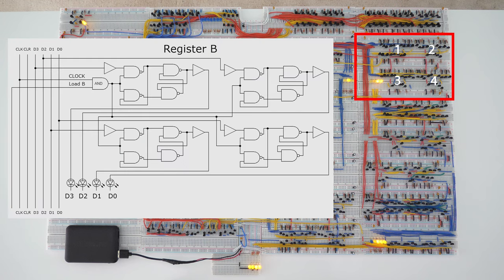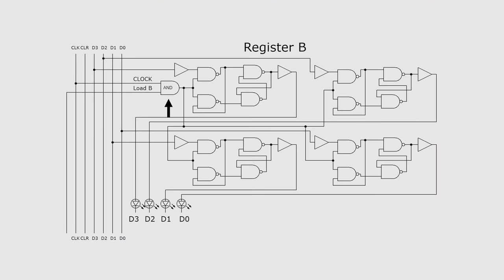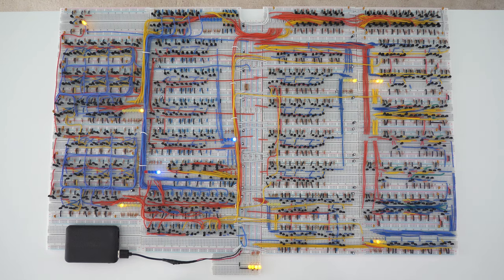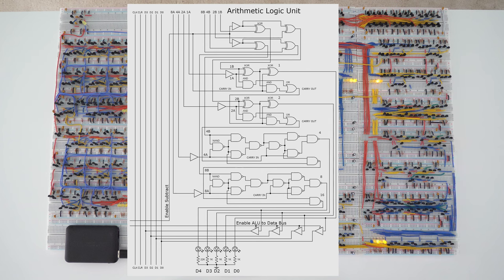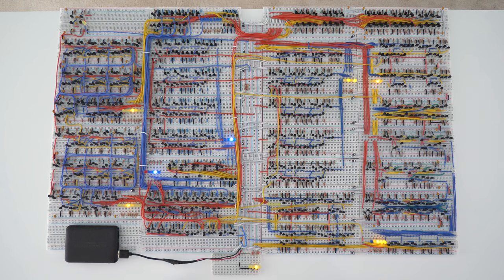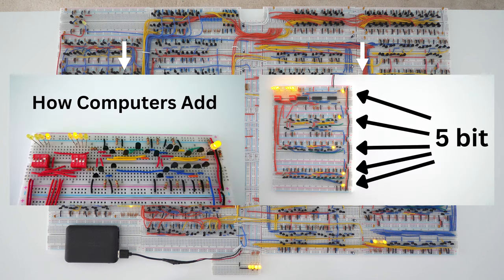The B register is built with four data flip-flops. These are not master-slave data flip-flops or edge-triggered JK flip-flops — they are just regular data flip-flops. Each flip-flop input has a buffer. The clock gate, which is an AND gate, is enabled with a high clock signal and high load B command from the control matrix. When the clock gate is on, it latches the data from the data bus into register B. The latched data is then continuously being sent into the ALU. The ALU is built with four full adders, which allows the circuit to add two 4-bit inputs. It also has four XOR subtract gates, which when enabled allows the ALU to compute A minus B. The bottom of the ALU contains tri-state buffers, which enables the ALU output value to be sent to the data bus. If you would like to learn more about how the ALU works, I do have two other videos about this.